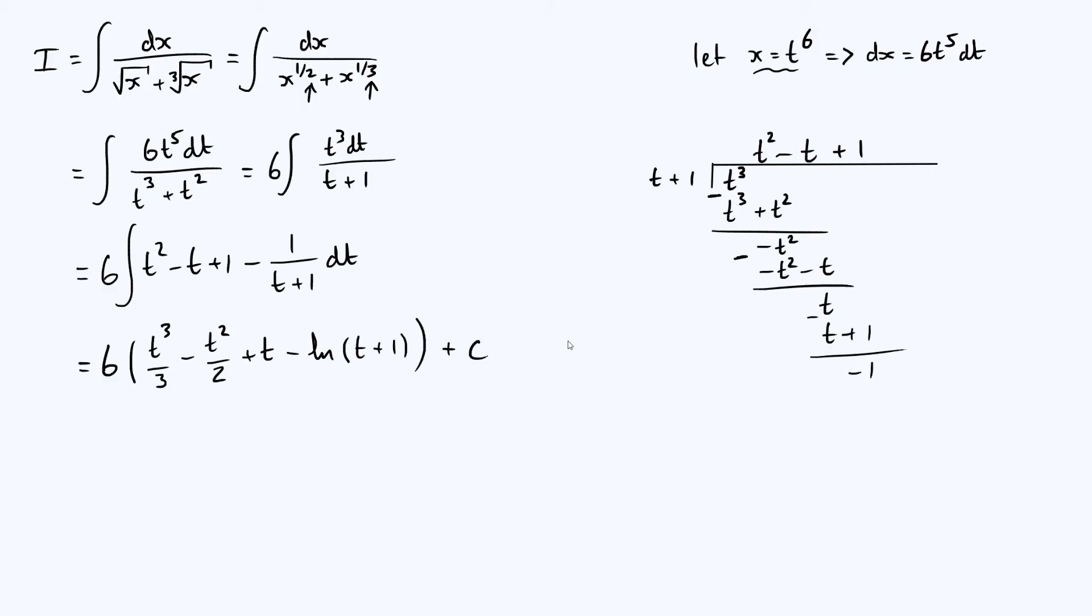And the last step is just going to be to rewrite this in terms of x, which was our original variable. So x was t to the 6th, and so t is x to the 1 6th. And so what are we going to get? Well,